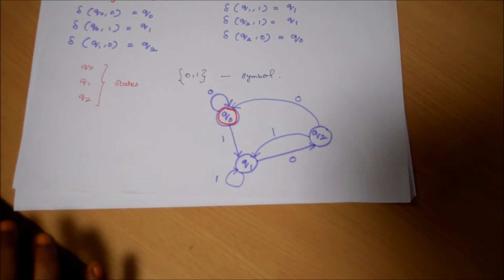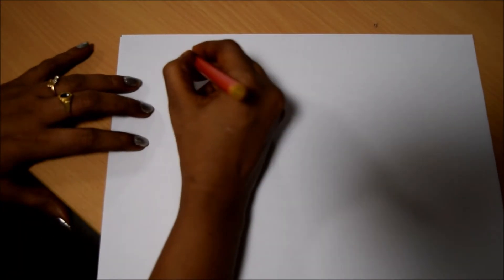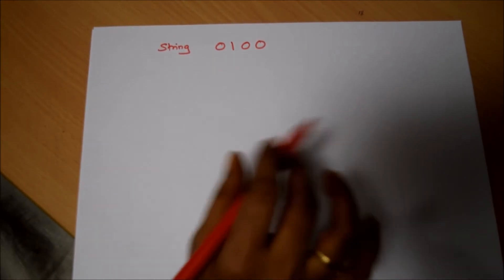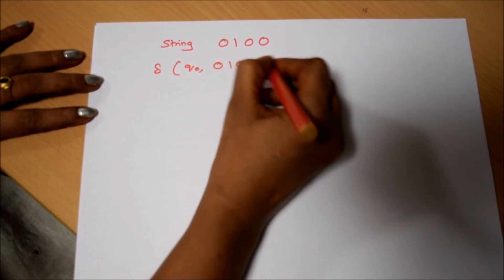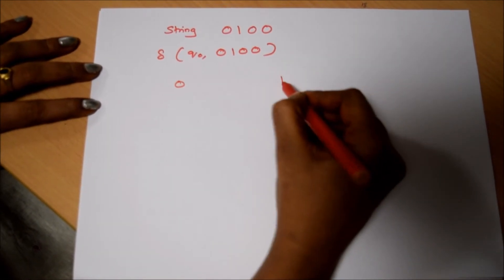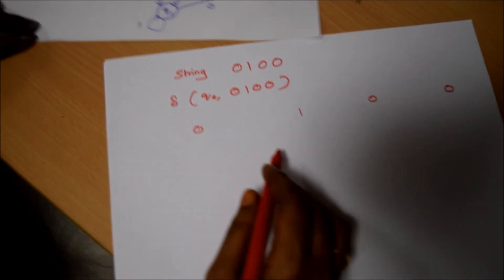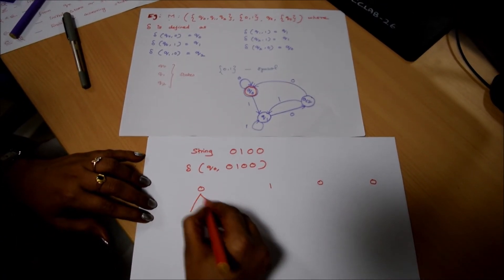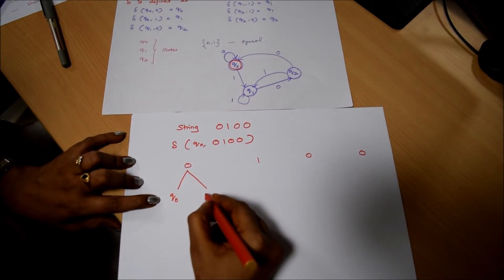Next I am going to consider one string and verify whether it is accepted by this DFA or not. The string value is 0100. Let us check whether it is accepted by the above DFA. The initial value starts at Q0, and the string is 0, 1, 0, 0. Q0 with 0 stays at Q0.